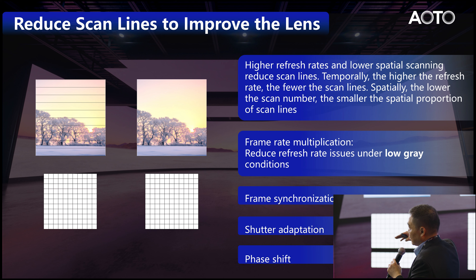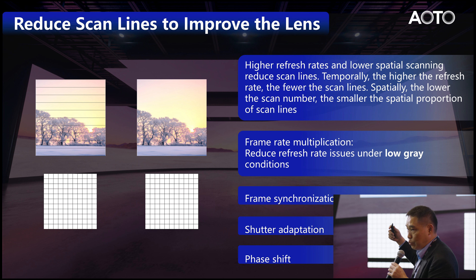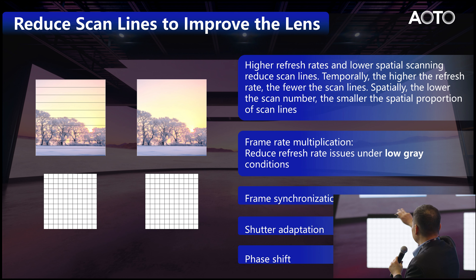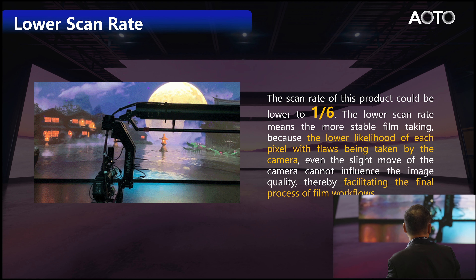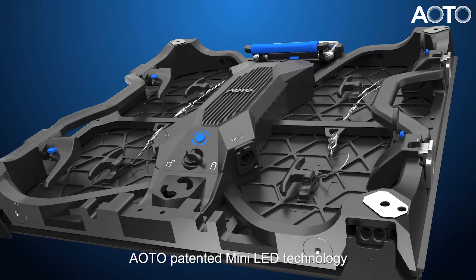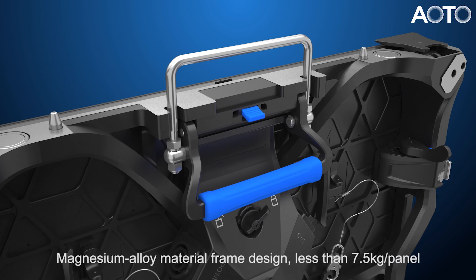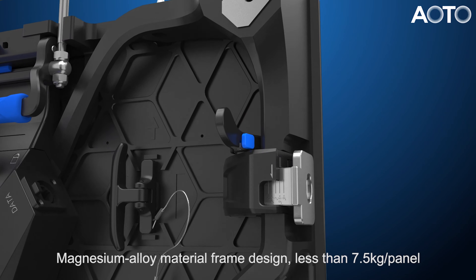High refresh rate is necessary. We achieve 7,680Hz for the screen, so you have sharp images for fast motion without any color loss. Also, a lower scan line is better — or even we can do frame-change rather than scan line. So for swimming or shooting scenes, you cannot see any scan lines on the screen.